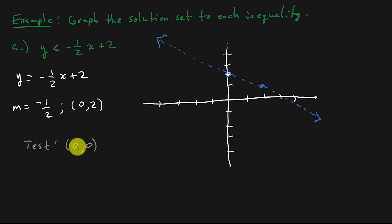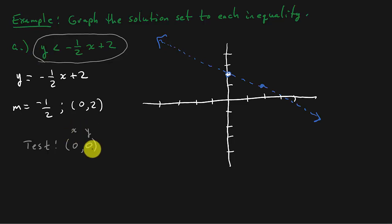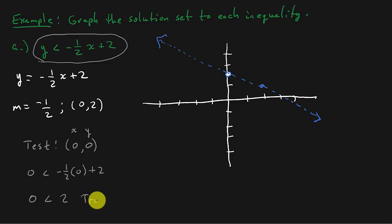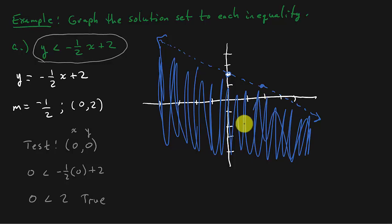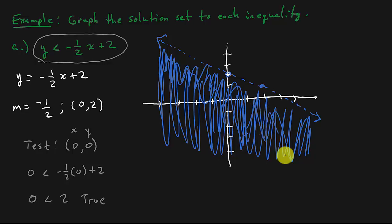Pick something easy. We take the point (0, 0) and plug it back into the inequality. Replacing x and y with zero, we get: 0 is less than negative one-half times 0 plus 2, which gives us 0 is less than 2. That is a true statement. Since I chose the point on this side of the line and got a true statement, I shade that side. This side gets shaded.